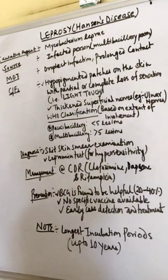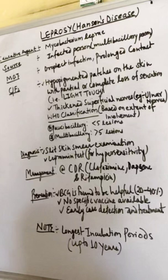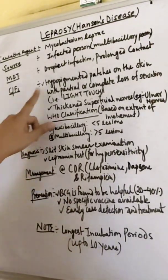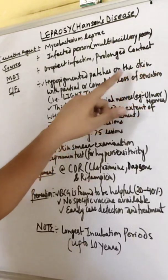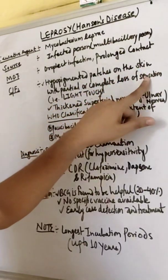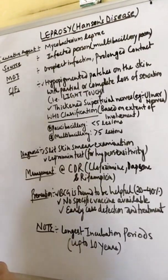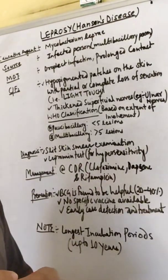Clinical features include hypopigmented patches on the skin with partial or complete loss of sensation, like touch. If someone is suffering from leprosy in the hand, the hand sensation is not felt.